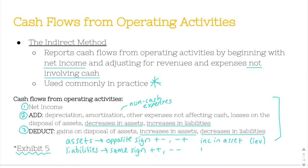On the other hand, an increase in a liability — let's take accounts payable as an example. If you are buying something on account and not paying for it in cash, accounts payable is increasing. The reason it increases is because you're not paying for it right now, so there is no outflow of cash. You're holding on to money by buying something on account and having a liability outstanding. So an increase in a liability represents an increase in cash for you.